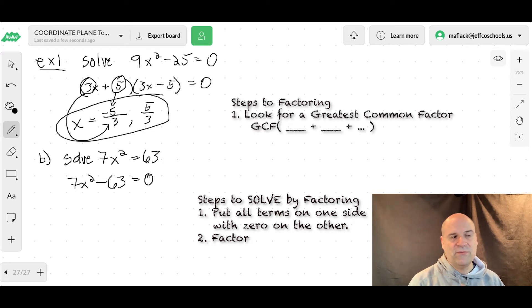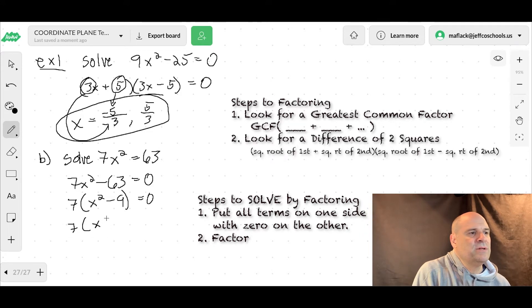First step is look for a greatest common factor. We do have one. It's 7. So take that out. You're left with x squared minus 9. And there's a beautiful difference of two squares. So 7 times x plus 3, x minus 3 equals 0.